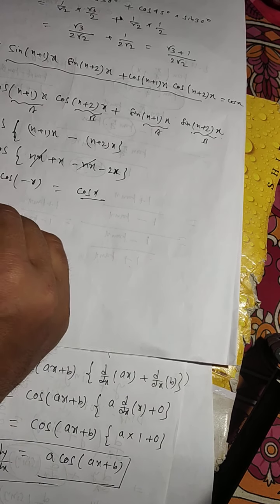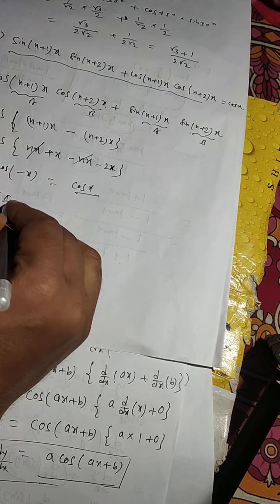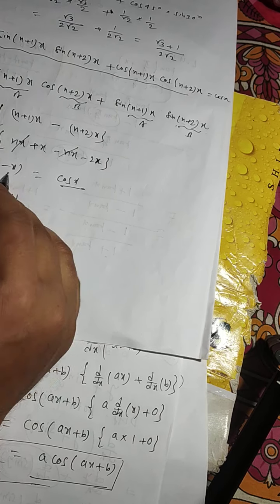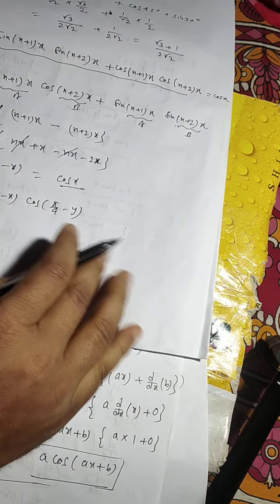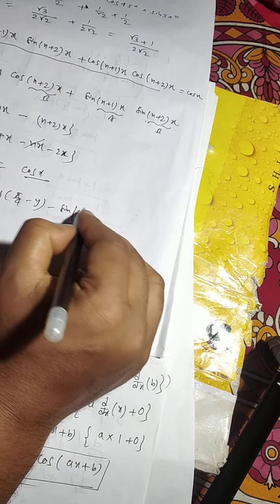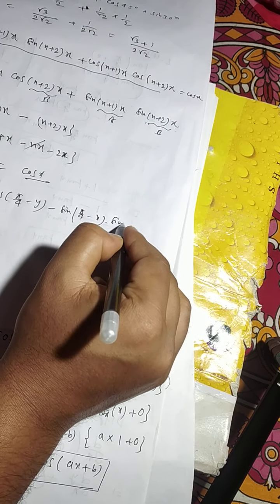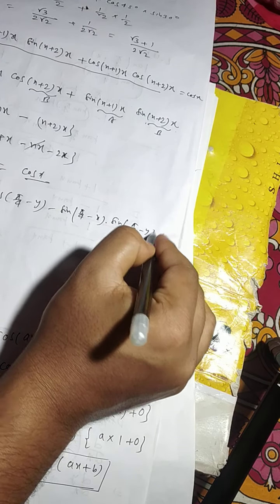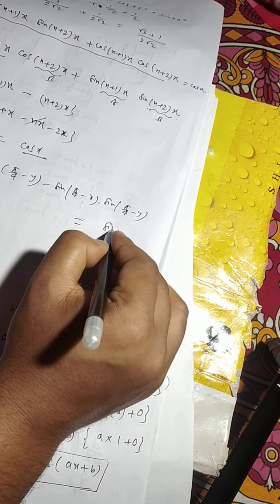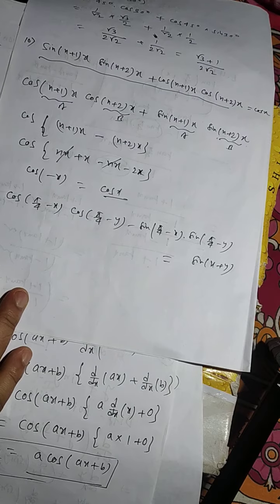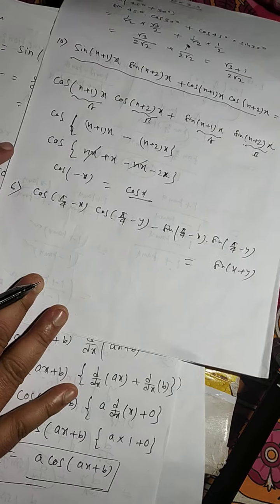Question number 6 is: cos(pi by 4 minus x) into cos(pi by 4 minus y) minus sin(pi by 4 minus x) into sin(pi by 4 minus y) equals sin(x plus y). You have to prove left hand side equals right hand side.